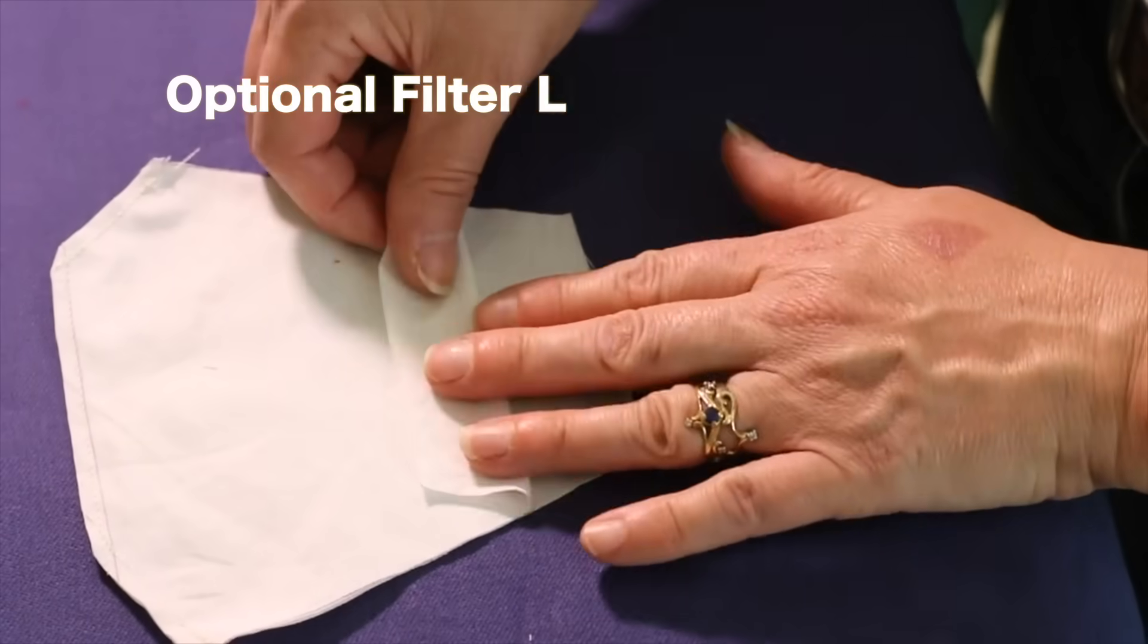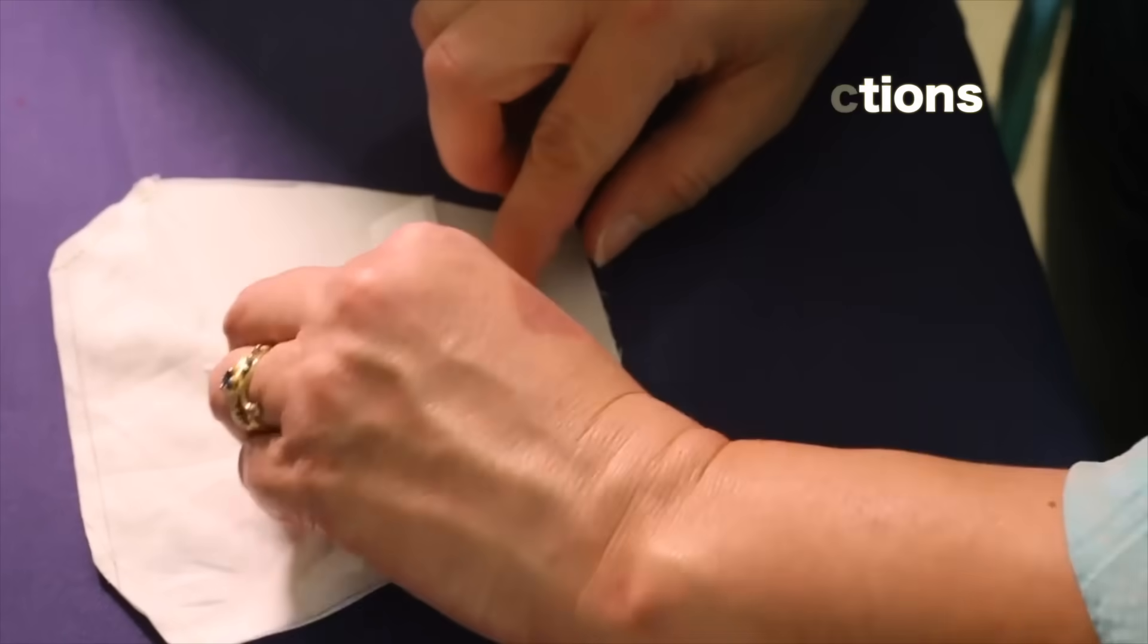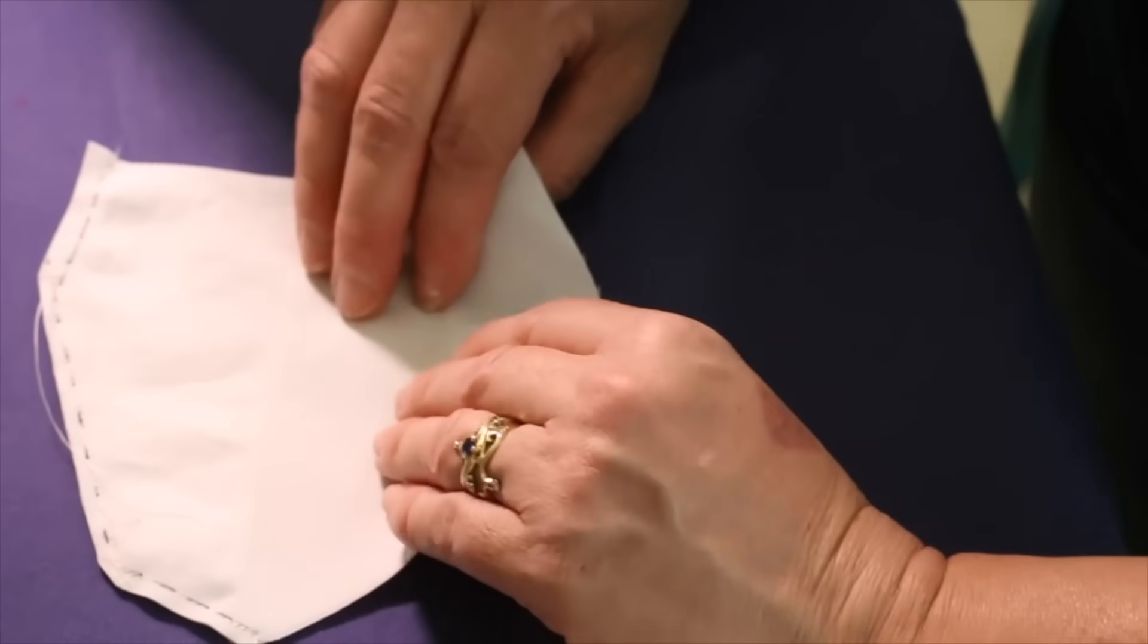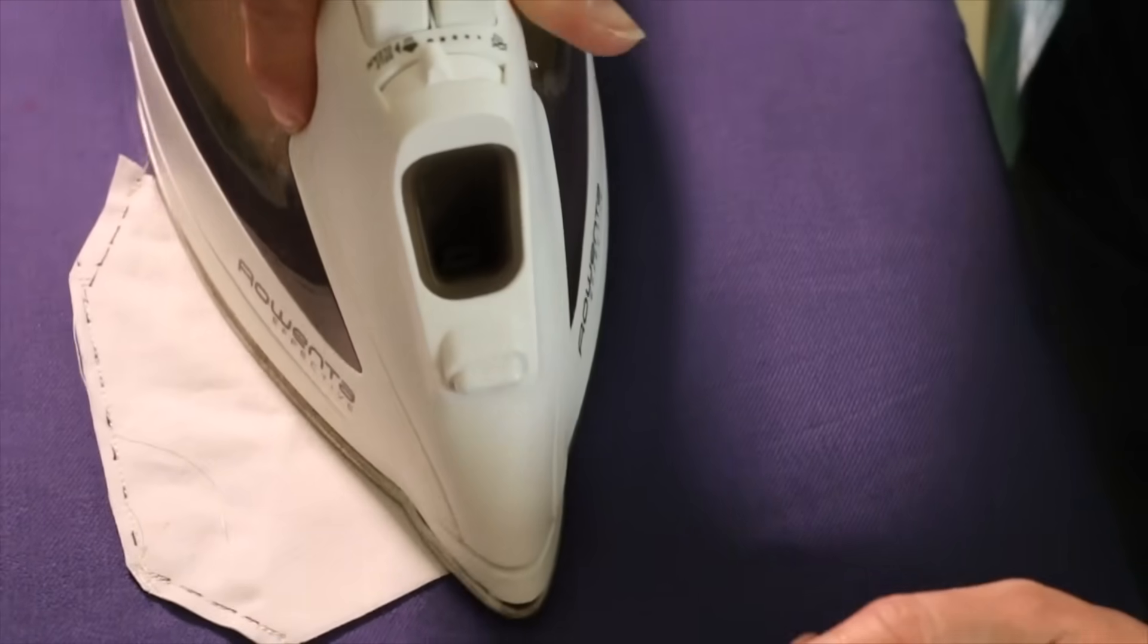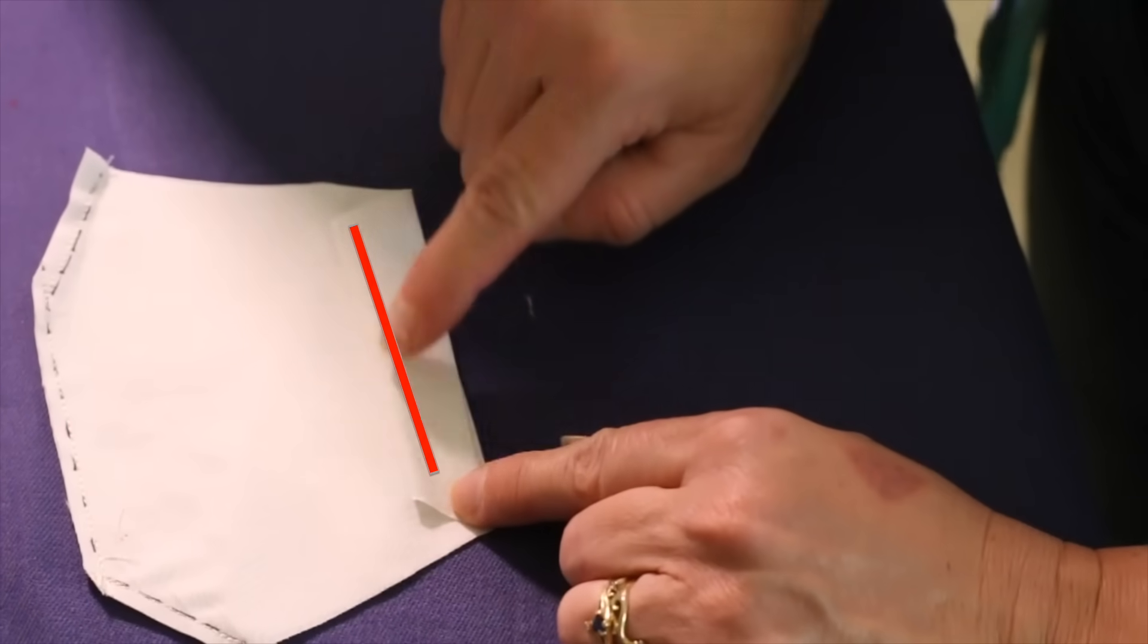This next step is only for those wanting to add a filter pocket. Just know that the more fabric you add, the harder the mask is to breathe through. Fold over half an inch of the material twice at the ends of the second liner. Press it with the iron. Now stitch over both sides along this edge to tack the fold over in place.